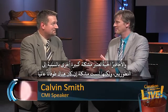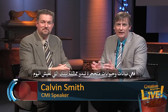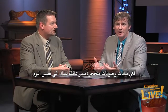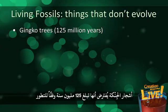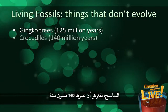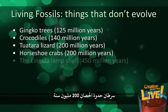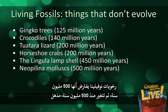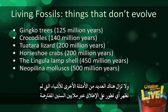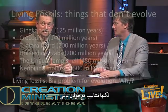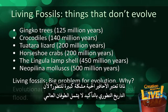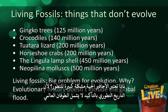Living fossils are another massive problem for evolutionists, but no problem if there was a global flood. There are fossilized plants and animals that look identical to those living today: Ginkgo trees supposedly 125 million years old, crocodiles supposedly 140 million years old, Tuatara lizards at 200 million years, horseshoe crabs at 200 million years, Lingula lampshells supposedly 450 million years old, and Neopilina molluscs supposedly 500 million years old with no change in 500 million years. Scientific observations just do not fit the evolutionary account of Earth history.